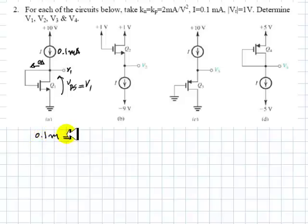So 0.1 mA is the current through the diode connected transistor. So we write 0.1 mA. The current in the diode connected transistor is, as we learned before, one half KN. Who is KN? KN is 2 mA per volt squared. So 2 mA that multiplies VDS, which is V1, minus the threshold voltage of 1V, and all of that goes squared. And we solve for V1, and V1 is the answer we're looking for.